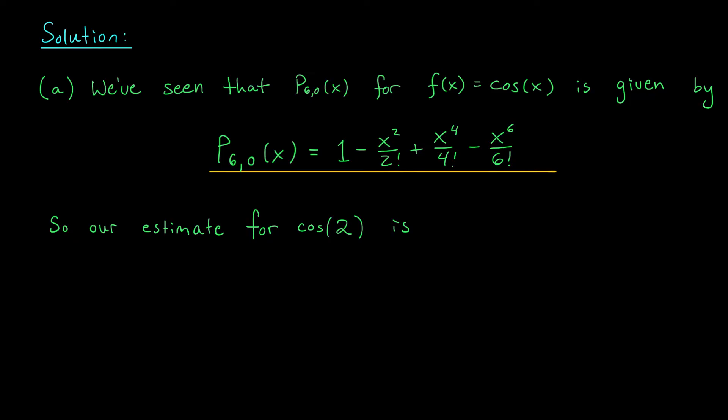Remembering the Maclaurin polynomials for cos(x) is actually very easy, because they follow a very strict pattern. Notice that we get all even powers of x divided by the even factorials, and our signs are alternating. This pattern is going to continue for the higher order Maclaurin polynomials as well. You can remember this pattern as long as you keep in mind that cos(x) is an even function. Perhaps it's not surprising that all the odd powers of x disappear. Try to show that this is the case. At any rate, now that we have this polynomial, we'd like to use it to estimate cos(2).